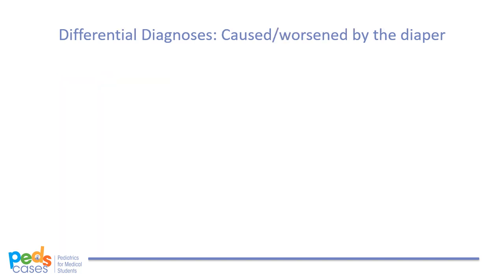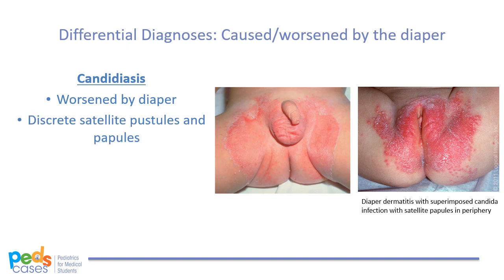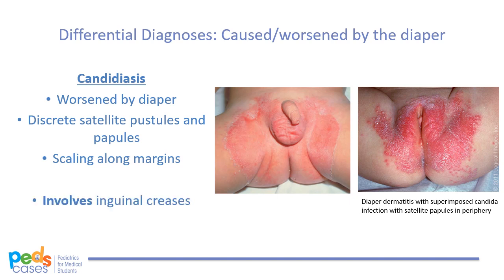Number two, candidiasis, is another common diaper rash either caused or worsened by the diaper. Candida can be distinguished from irritant contact dermatitis by the location it involves. Candida will usually involve inguinal creases with discrete separate satellite pustules and papules and scaling along the margins. The rash can start out as a primary candidal infection or develop as a complication from irritant contact dermatitis.